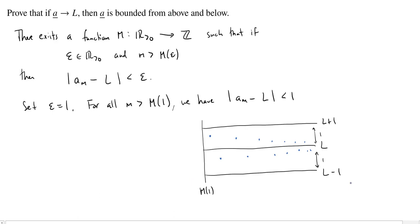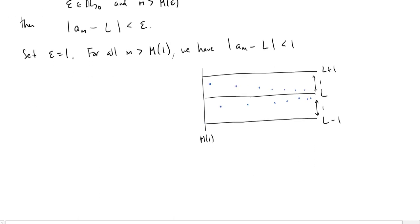But it has to lie in between L plus 1 and L minus 1, once we get past m of 1, which tells us that for all of the values of m past m of 1, the values of the sequence, a, are going to be less than L plus 1 and greater than L minus 1.